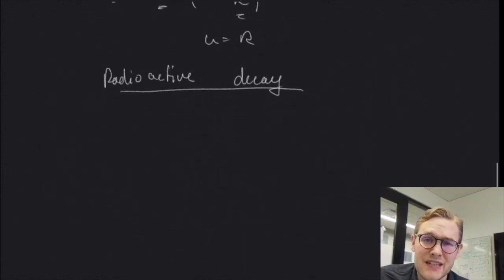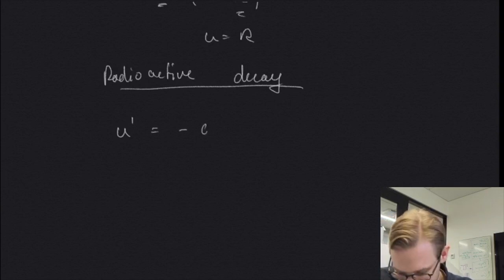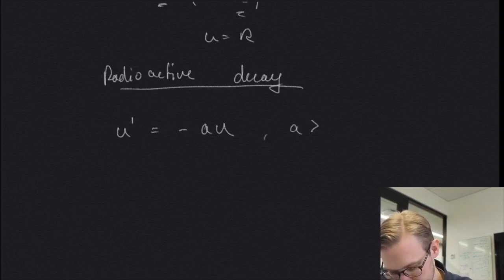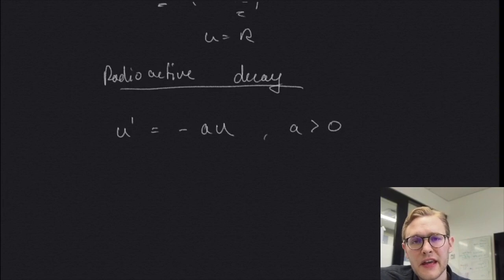Radioactive decay is another example, also a somewhat simple expression. The rate of u equals minus a times u, where a is larger than zero. And here a represents the rate of decay of our radioactive material, u.